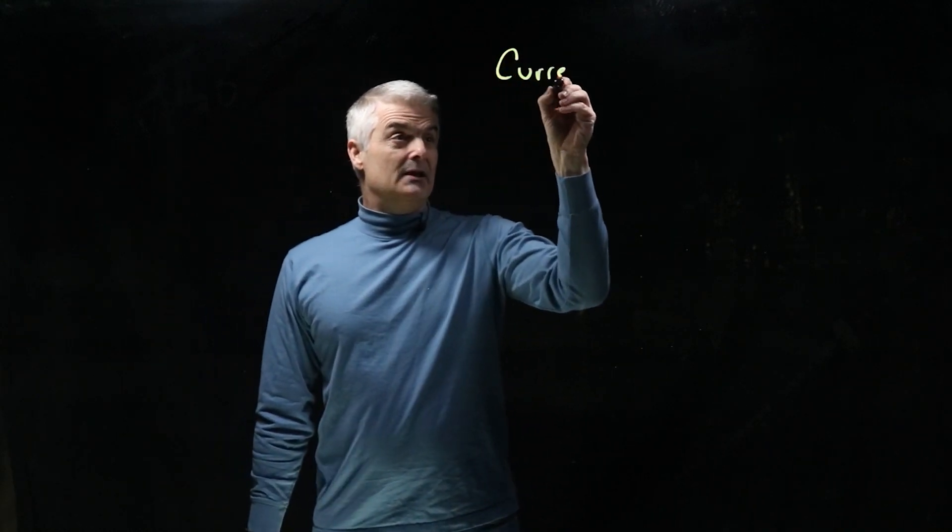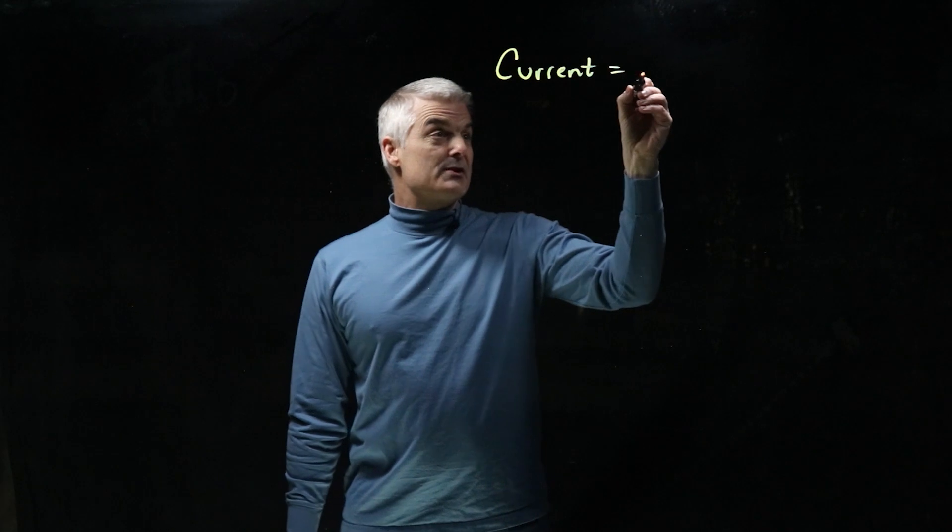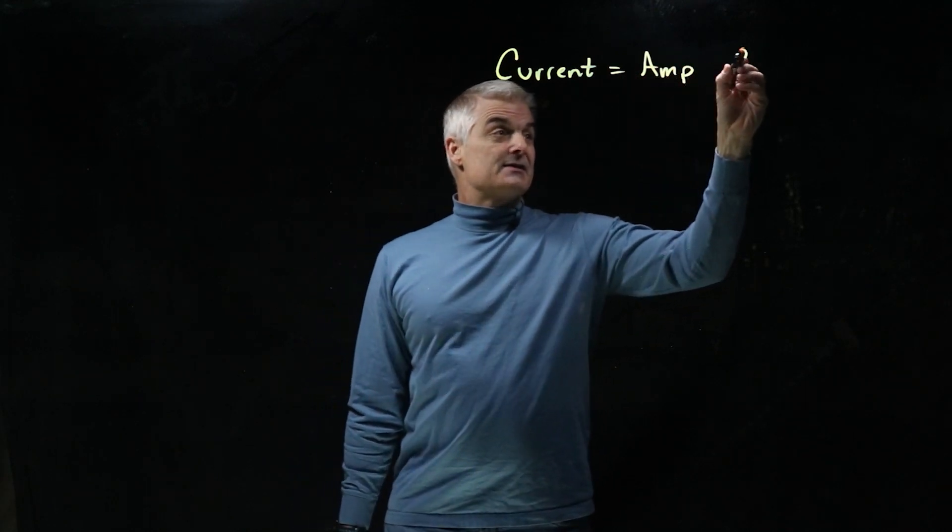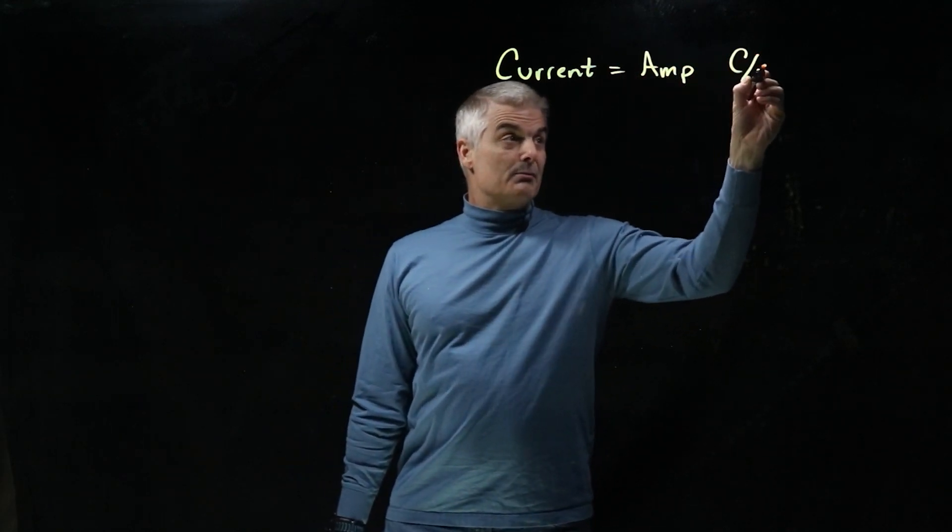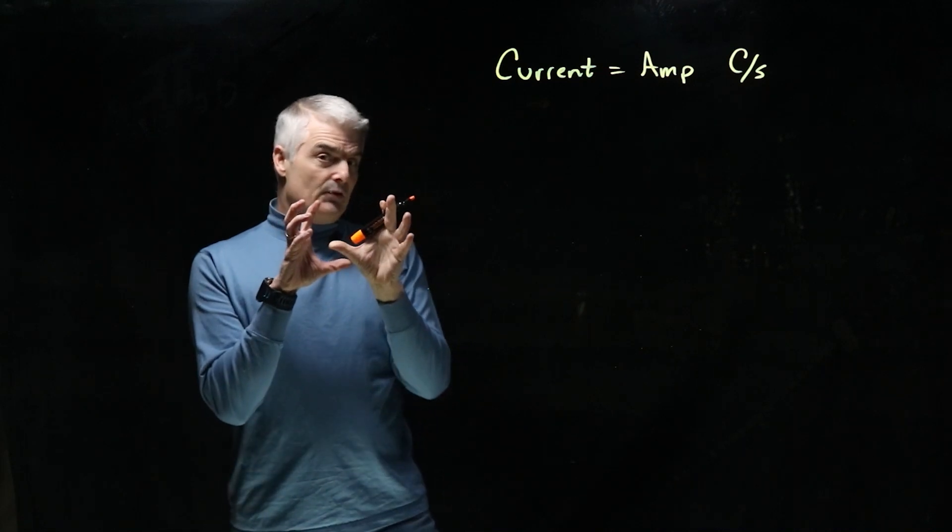Now in the last segment we talked about current. Current, as you recall, is measuring something called an amp, and that's the number of coulombs per second. That's like the speed of the river.